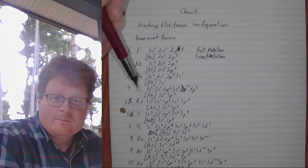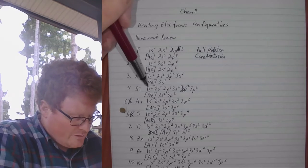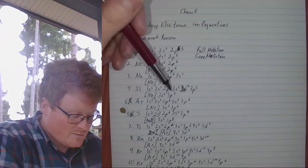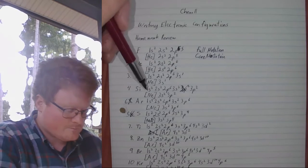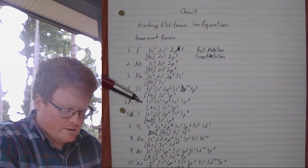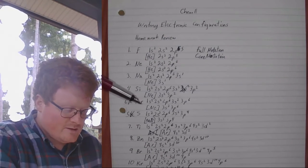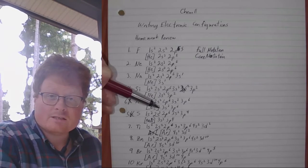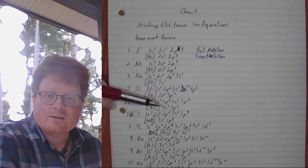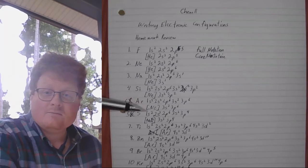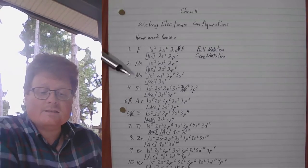Silicon over in 3P. Going through, you get 3S2, 3P2. Neon in the core notation, 3S2, 3P2. Argon is similar. In the core notation, 3S2, 3P6. It's another noble gas. It's going to have six P electrons in the subshell.